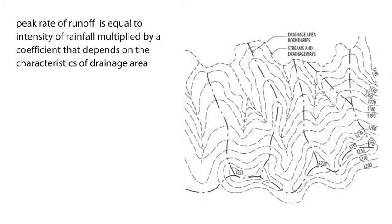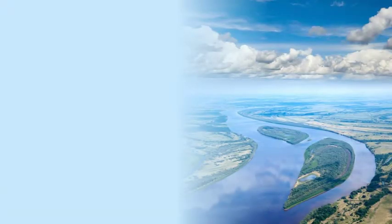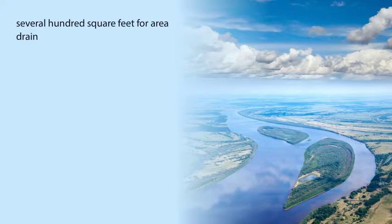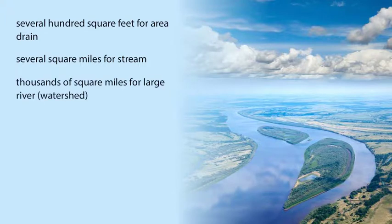The equation is based on the theory that the peak rate of runoff from a small area is equal to the intensity of rainfall multiplied by a coefficient that depends on the characteristics of the drainage area, including land use, soils and slope, and by the size of the drainage area. The extent of the drainage area is determined by connecting the high points and ridge lines on a topographic map or grading plan until a closed system is developed. Drainage areas may vary in size from several hundred square feet (40 to 50 meters squared) for an area drain, or several square miles or square kilometers for a stream, up to thousands of square miles or square kilometers for a large river, in which case it is called a watershed.